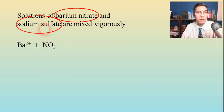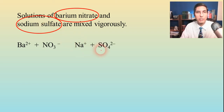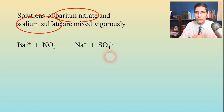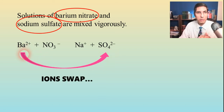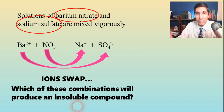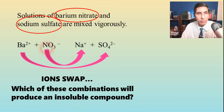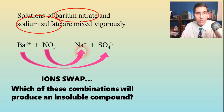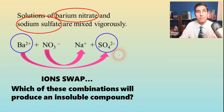The next compound is sodium sulfate. Once again, that's a solution, so we write it in its ionized form: sodium ions and sulfate ions. The question we want to ask ourselves is: when these ions swap partners — the barium tries to get with the sulfate, and the sodium tries to get with the nitrate — which of those combinations is going to produce an insoluble compound? Sodium nitrate has a nitrate on it, so it's going to be soluble. But barium sulfate is insoluble — that's one of the six sulfates that is insoluble.